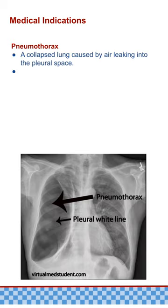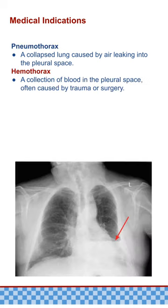Medical indications for placement of a chest tube include pneumothorax, which occurs when air accumulates in the pleural space causing partial or complete lung collapse. Indications include large or tension pneumothorax where air accumulates rapidly and compresses the lung leading to cardiovascular compromise, and recurrent pneumothorax when a patient experiences multiple episodes, especially if conservative management has failed. Hemothorax is the accumulation of blood in the pleural cavity, often resulting from trauma. Indications include significant blood loss where the volume compromises lung function or causes hemodynamic instability, and traumatic injury such as rib fractures, penetrating chest trauma, or blunt chest trauma with evidence of internal bleeding.